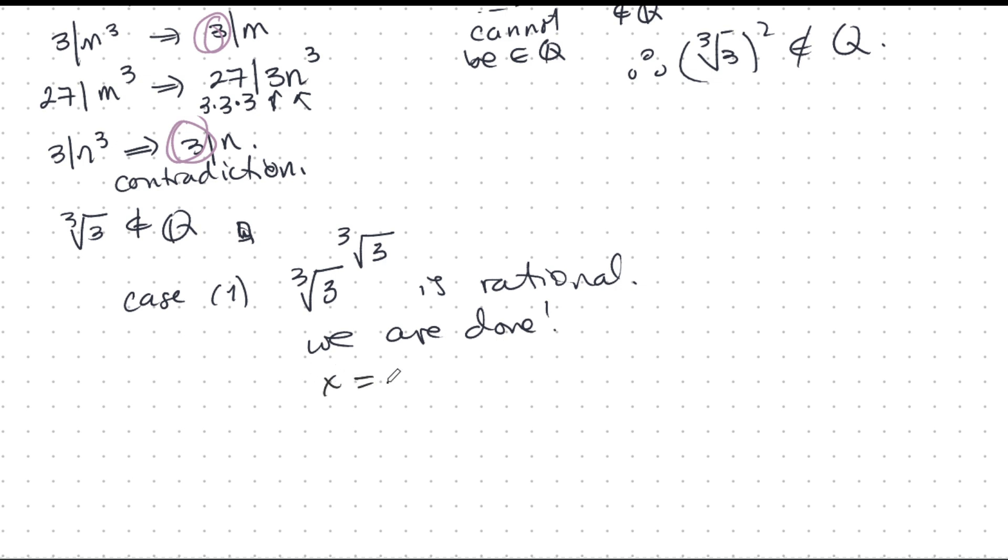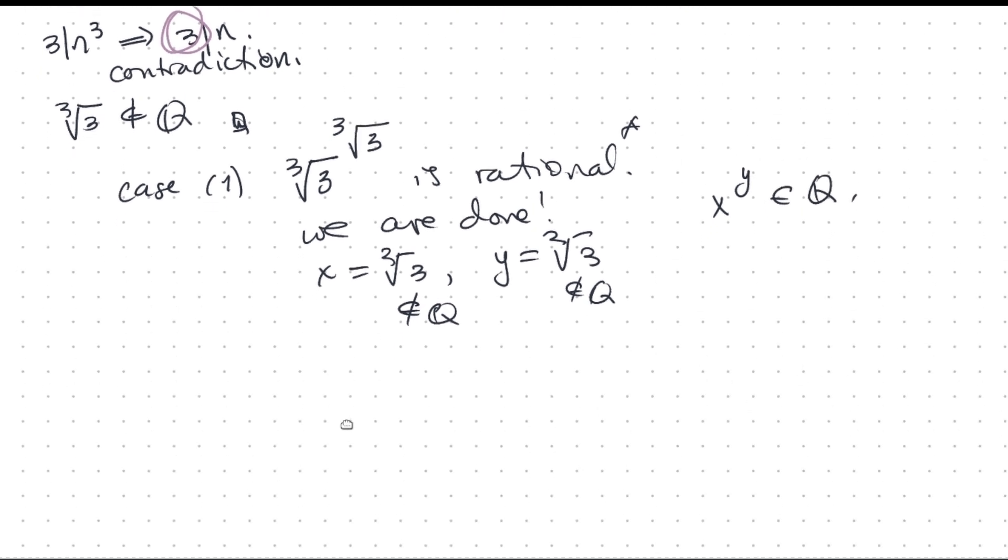Why are we done? Because I take x is cube root of 3, and y is cube root of 3. We proved they're both not in Q, they're both irrational. And we know that x power y is in Q because we assumed this over here. So we're done. We have an example of two irrationals when one is raised to the power of the other gives you a rational.